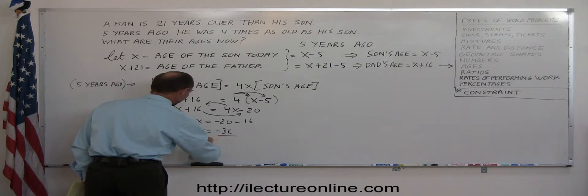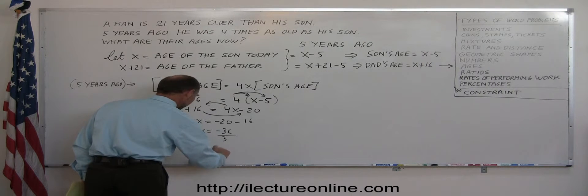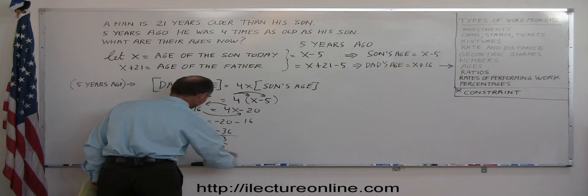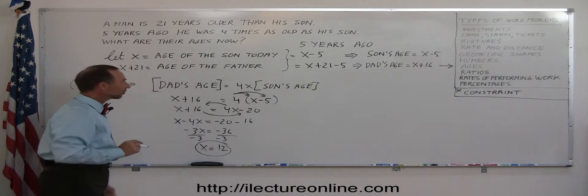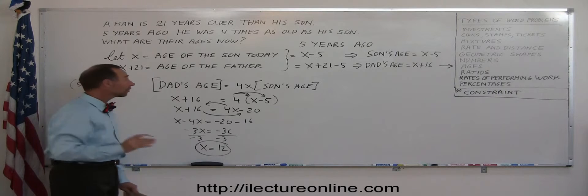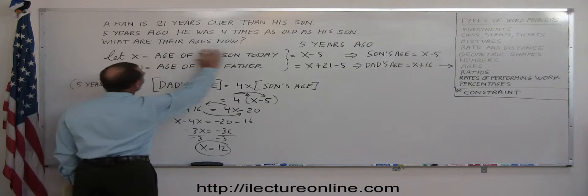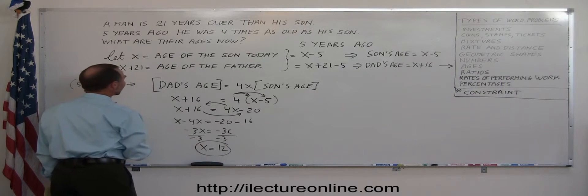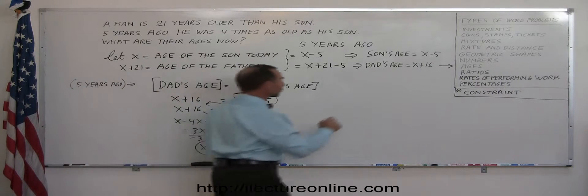Divide both sides by negative 3. And we get x equal positive 12. Now what does that x represent? So here again you see the value of really well defining your variables. x is the current age of the son. So x equals 12. That means today the son is 12 years old.